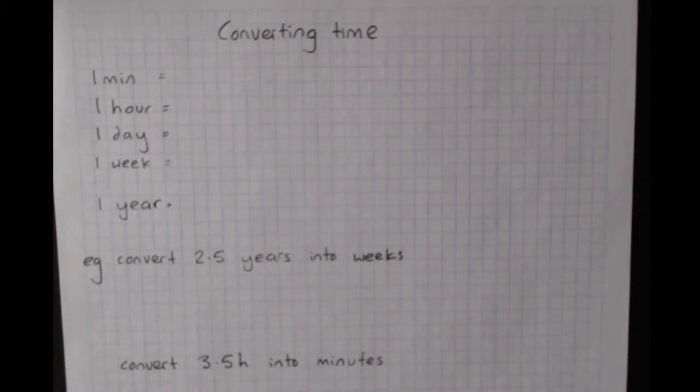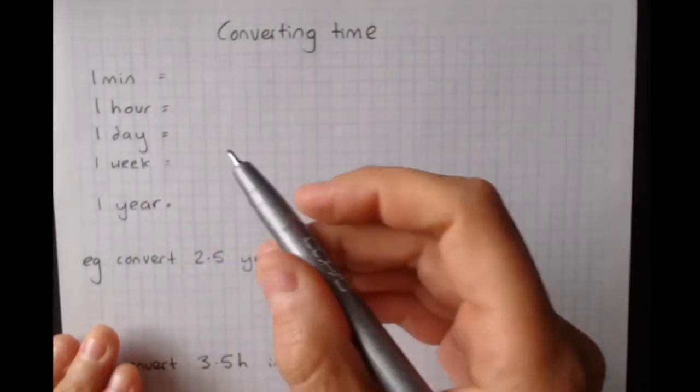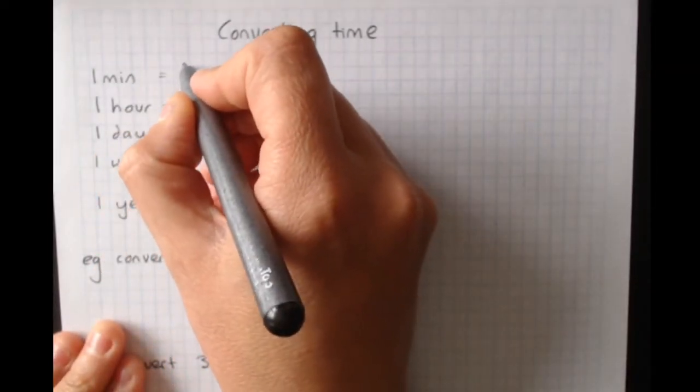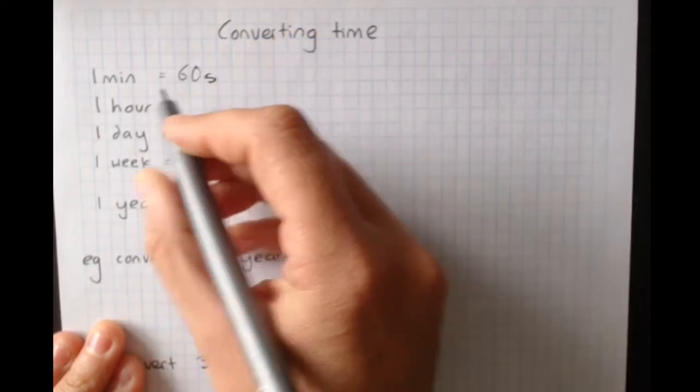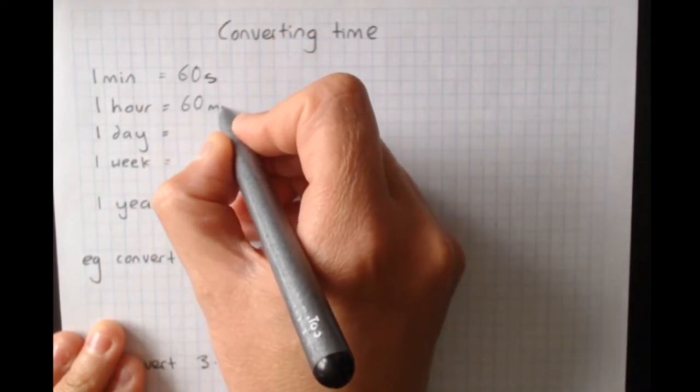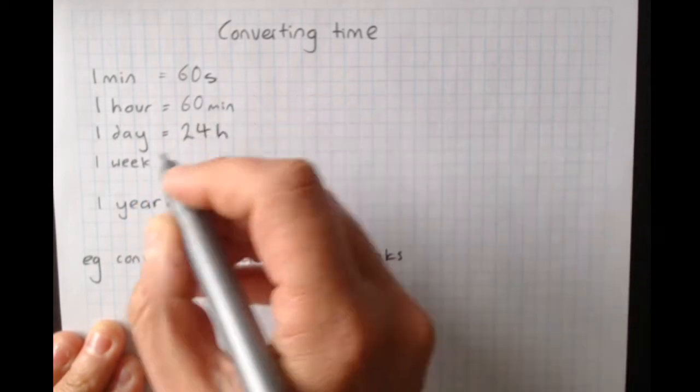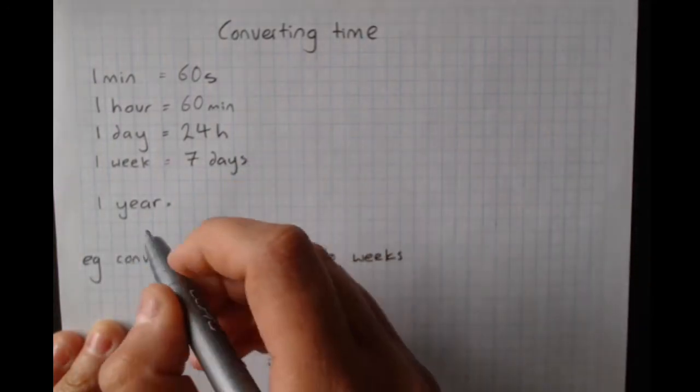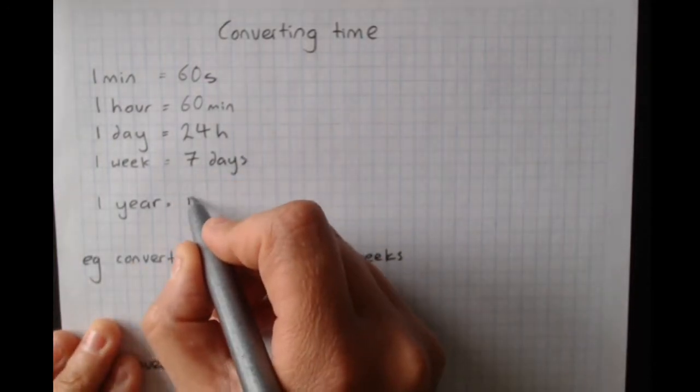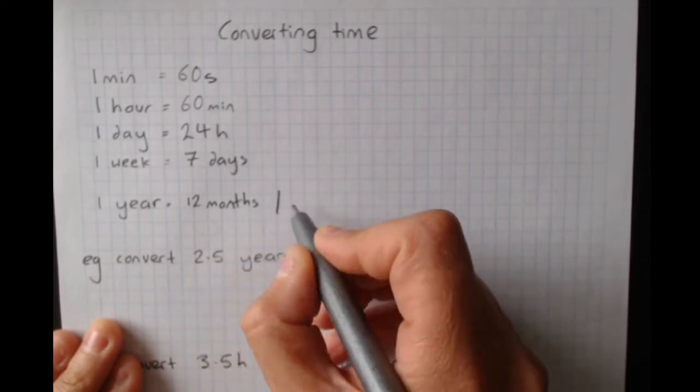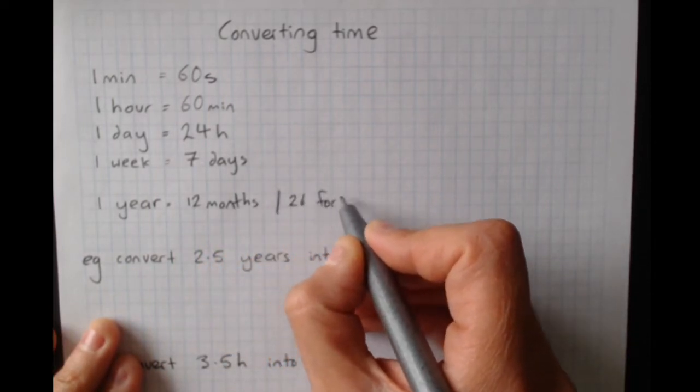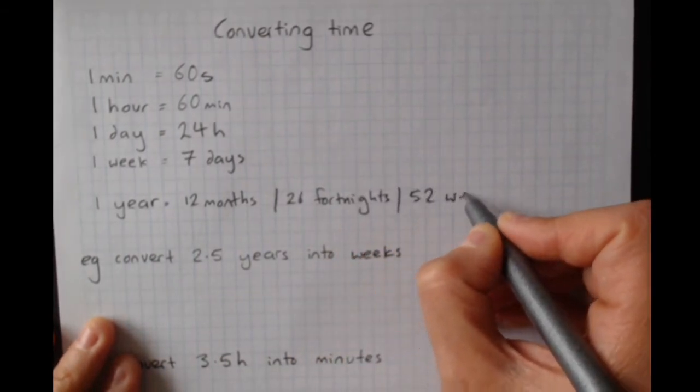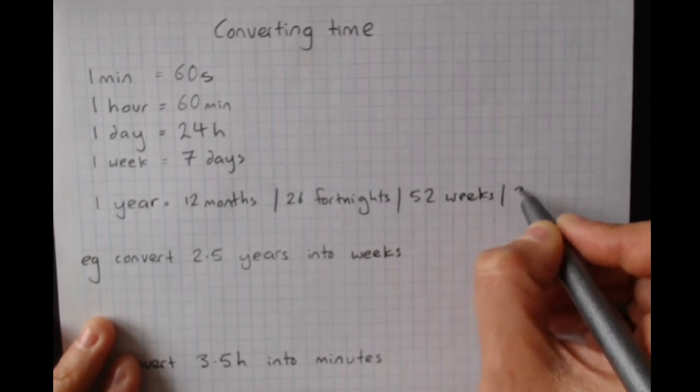Converting time. When we're studying rates, converting time, the rates between the different units, is also important. So one minute is 60 seconds. One hour is 60 minutes. A day is 24 hours. A week is 7 days. We know all these. A year can be 12 months or 26 fortnights or 52 weeks or 365 days.